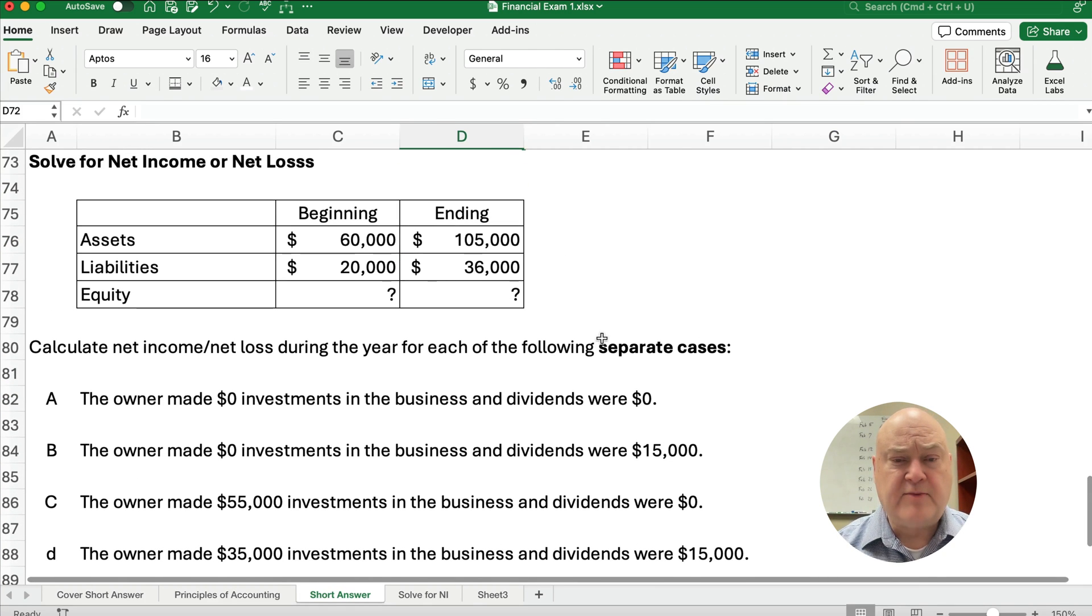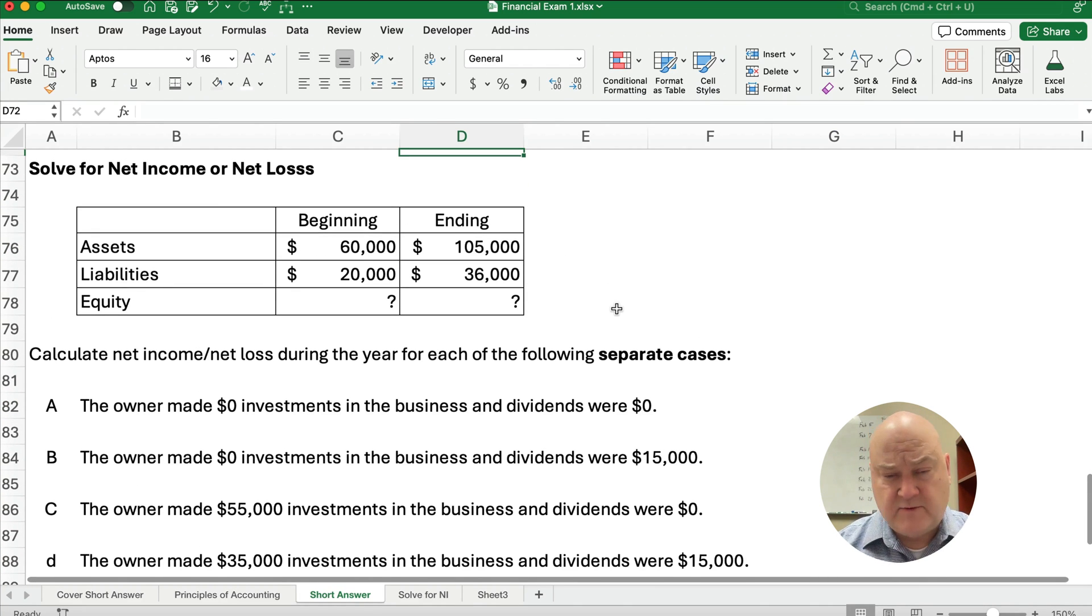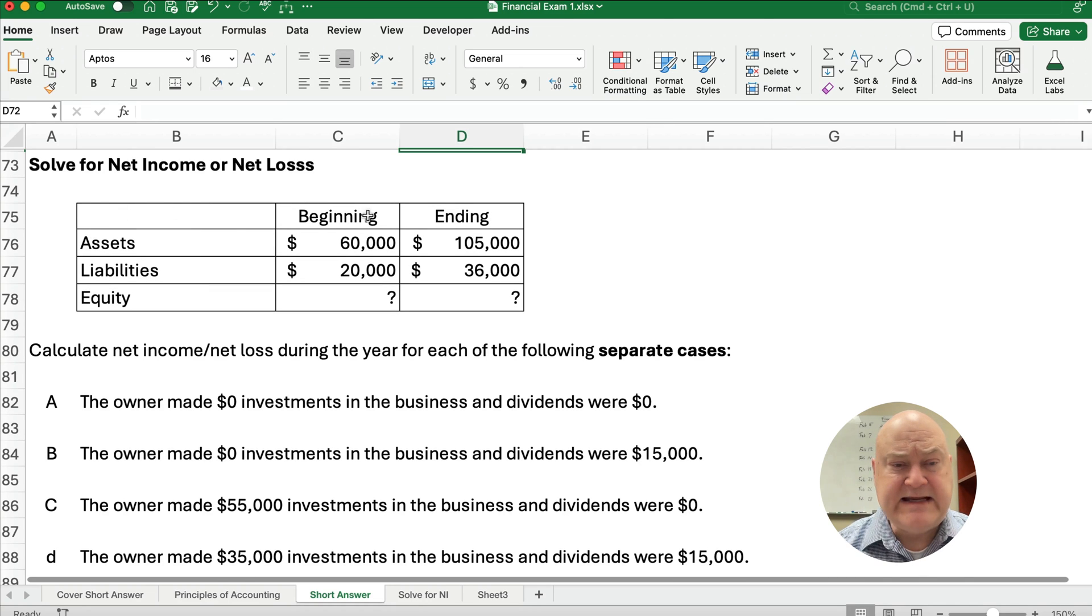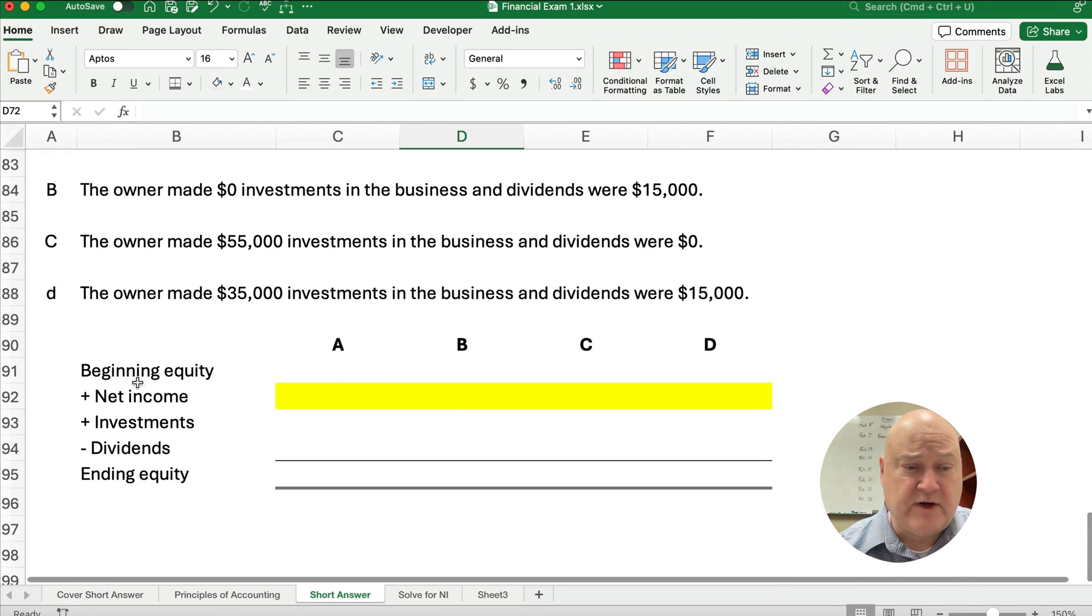Now, let's do a final problem here in this video, and we'll switch over to journal entries on the next video. We're going to solve for net income or loss. We have beginning assets, liabilities, and equity. We have ending assets and liabilities. We're trying to solve for equity. And it says calculate net income or net loss for each of the following separate cases.